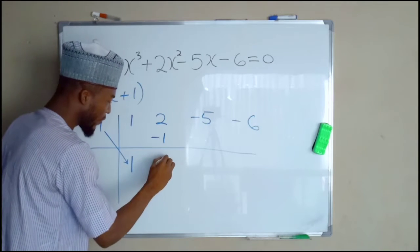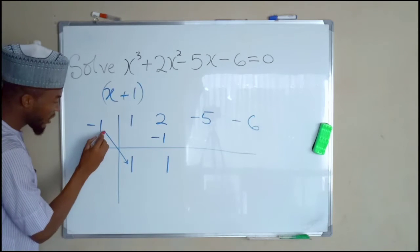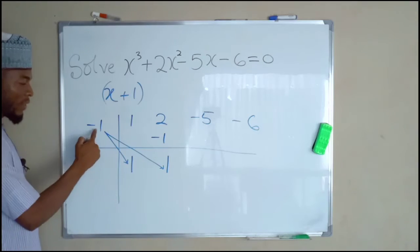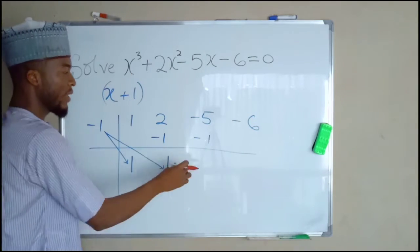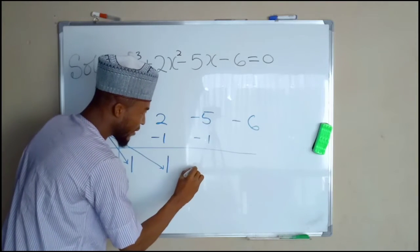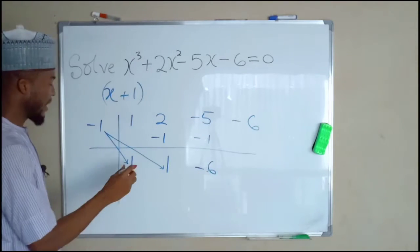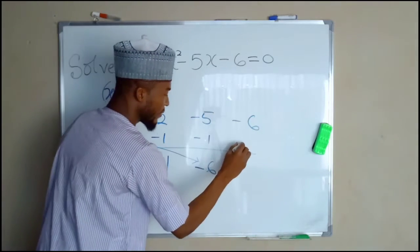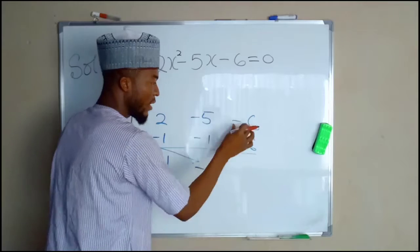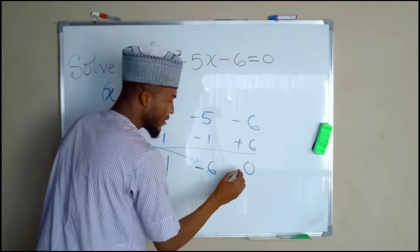This plus this is positive 1. We multiply this again with this positive 1. This time, this is negative 1. We write it here on that negative 5. This plus this is negative 6. Again, we multiply this with that negative 6. And it will give us positive 6. If you add this together, you get 0.